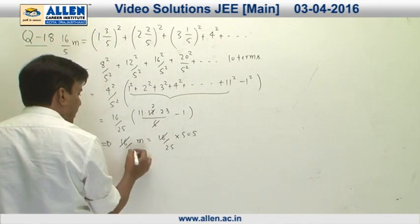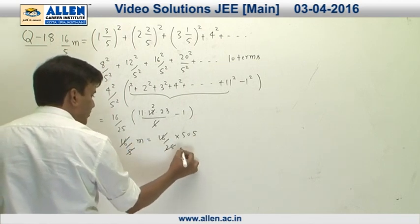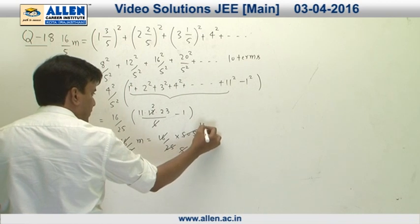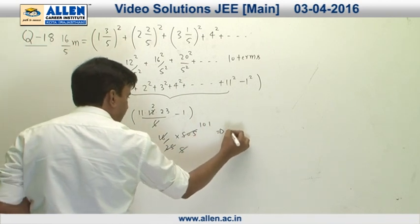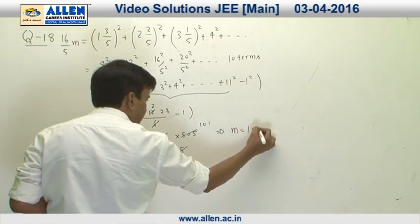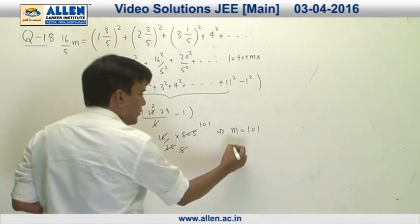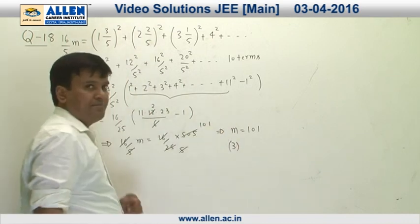We can see the 16 will cancel out, this 5 will cancel out, and this is 101. So m is going to be 101, and hence the answer for this question is 3.